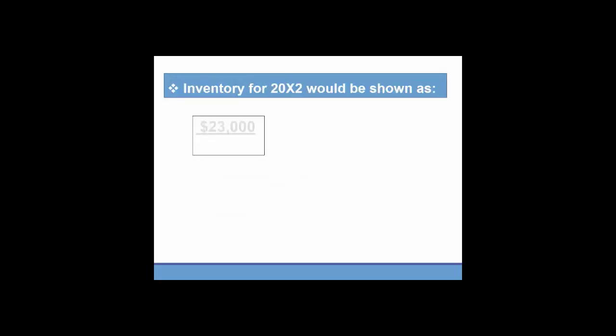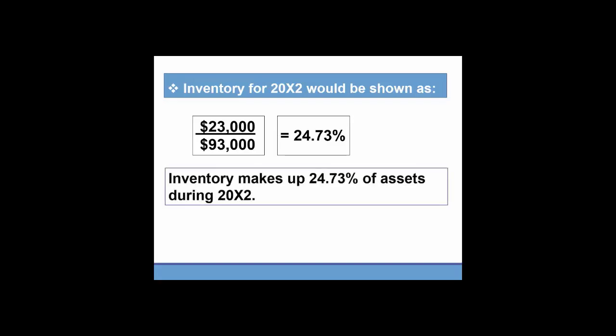Alright, so again, inventory calculation, that $23,000 of inventory balance divided by $93,000 of total assets. That 24.73%, what that means is that inventory makes up 24.73% of assets during 20x2.